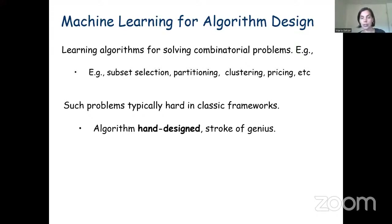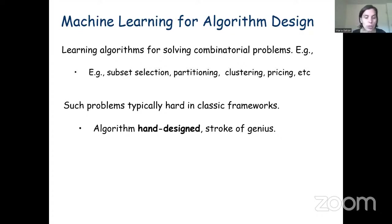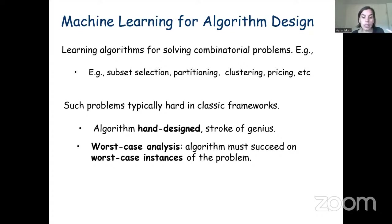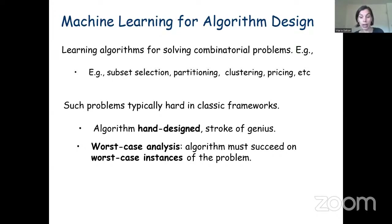Such problems, and in fact most combinatorial problems, are hard within the classic analysis frameworks. In these classic frameworks, we assume that the algorithm designer designs the algorithm analytically by hand. From an analysis point of view, we impose that the algorithm must succeed even for worst-case instances — even just the one-shot worst-case instance of the underlying algorithmic problem.